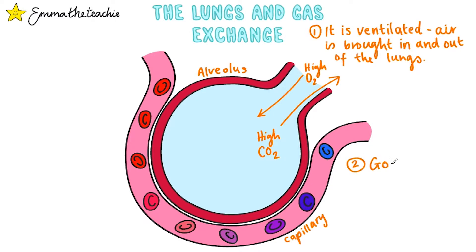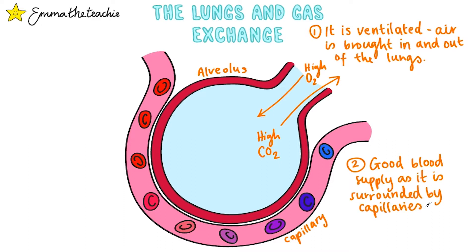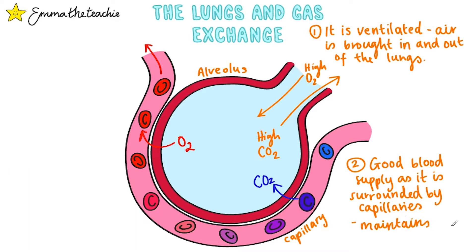Secondly, it has a good blood supply as it's surrounded by a capillary network that covers 70% of the alveolus. The blood that arrives to the alveolus has got a high concentration of CO2, which diffuses out of the blood and into the alveolus where it has a lower concentration of CO2. The blood that is arriving also has a low concentration of oxygen, whereas the alveolus has a high concentration of oxygen — so it diffuses out and into the blood. This maintains a really steep concentration gradient as the blood quickly transports that new oxygen away, keeping that diffusion gradient going.